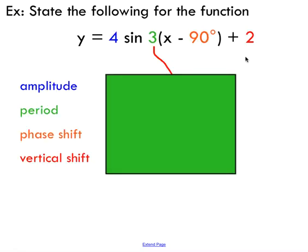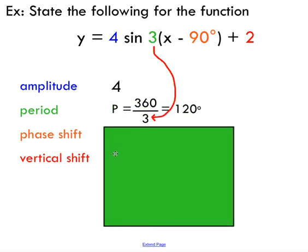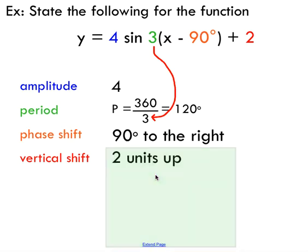Here's an example equation of a transformed sine graph. The amplitude is four — that's the distance from the max or min to the central axis. The k value is three, so the period is 360 divided by three, giving us 120 degrees — three full cycles in 360 degrees. There's a phase shift to the right by 90 degrees. Remember, subtracting after the x means moving to the right — it's counterintuitive. And lastly, the vertical shift is two units up.